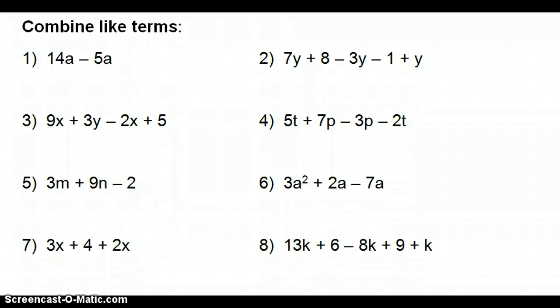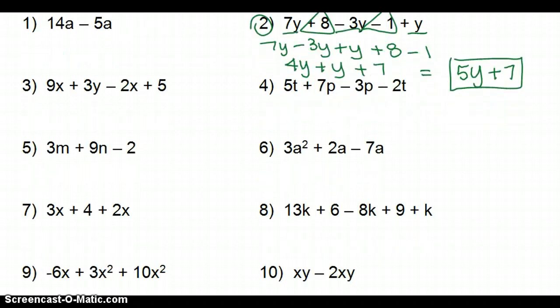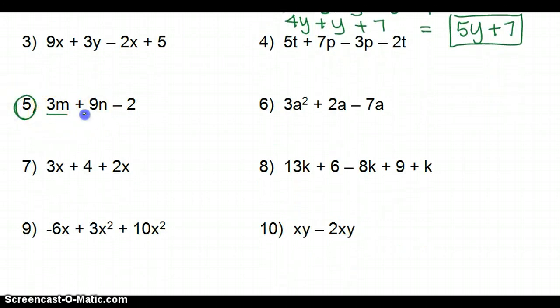I want to look at two of them with you. Let's look at number 2 first. We have 7y, negative 3y, and a positive y. So, if I rewrite this problem, putting my like terms together. And then, the constant 8 and negative 1 need to be lumped together. So, now I say 7 minus 3. 7y take away 3y is 4y. Plus y. And then, 8 take away 1 is 7. And 4y and y make 5y plus 7. So, that's how that problem is simplified. And then, look at number 5. 3m, 9n, negative 2. That one is already simplified. So, you can just write the word simplified.